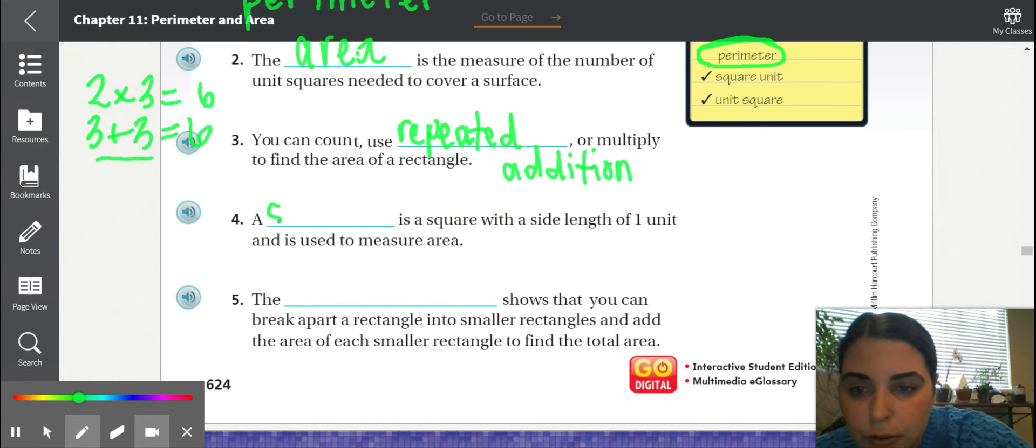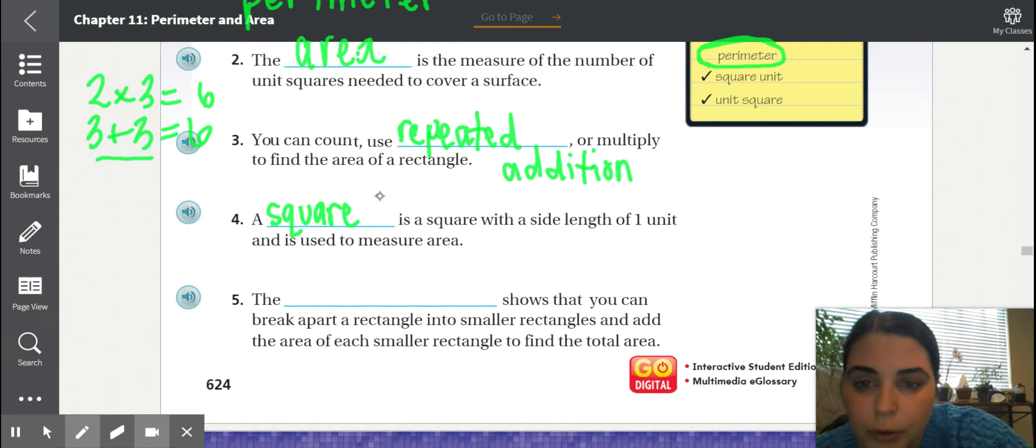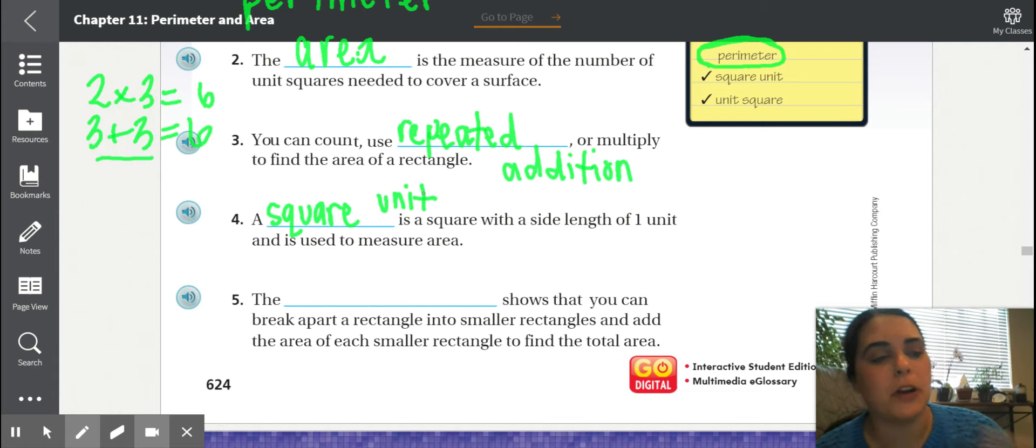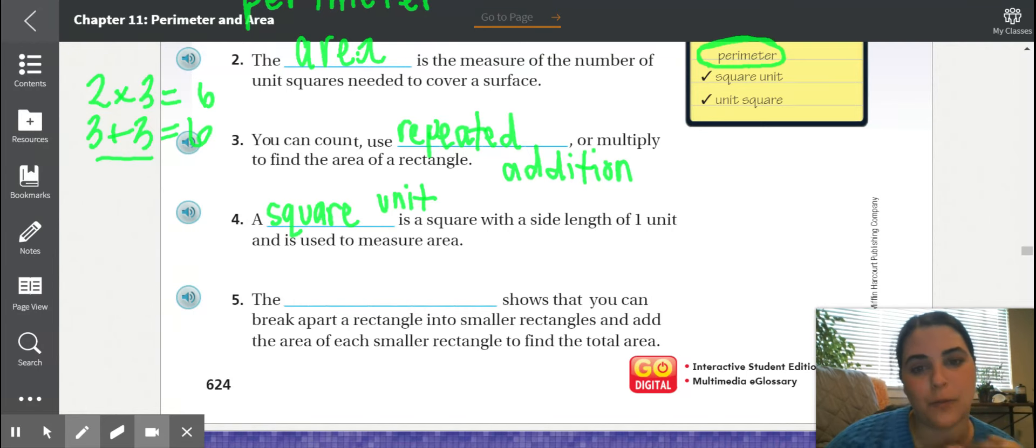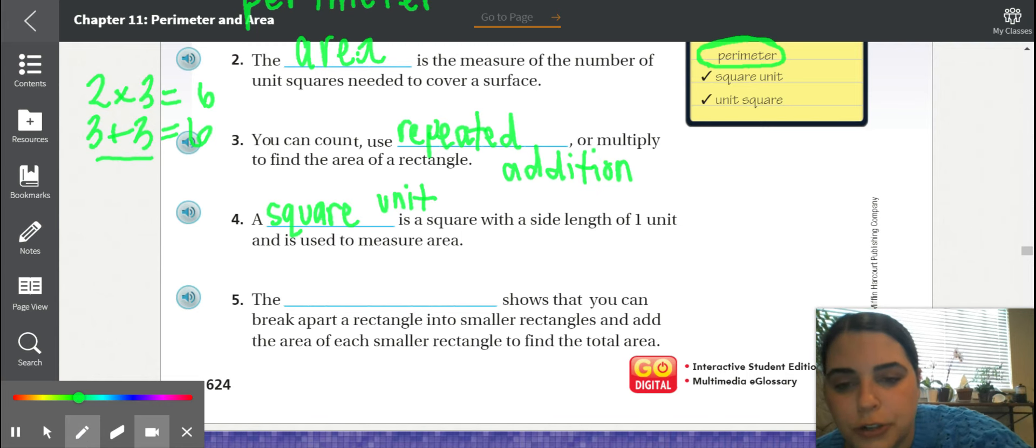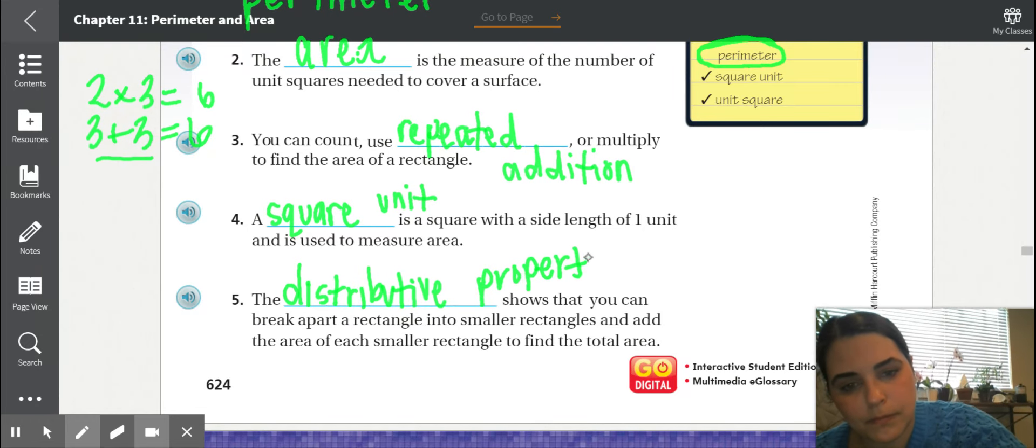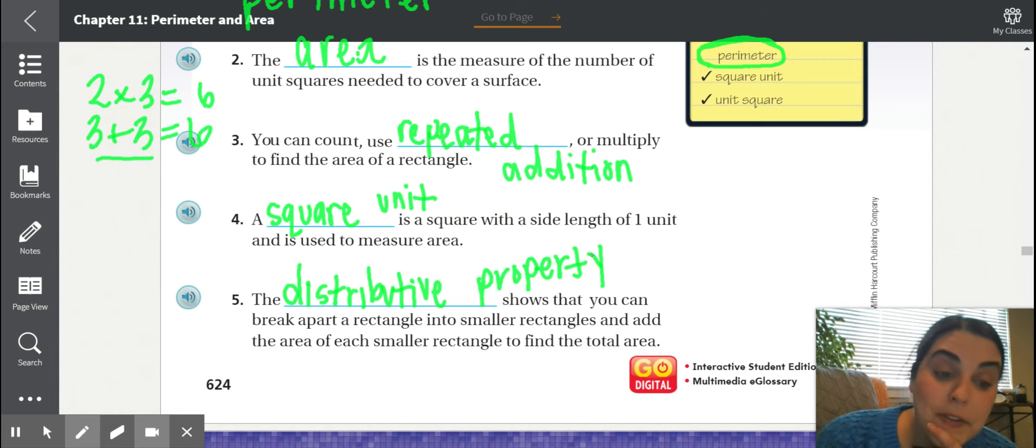Number four. A blank is a square with a side length of one unit and is used to measure area. We would call that square units. Last one, number five. The blank shows that you can break apart a rectangle into smaller rectangles and add those rectangles back together. The break apart property is also called the distributive property. We're going to be using that again in this chapter.